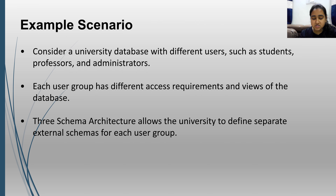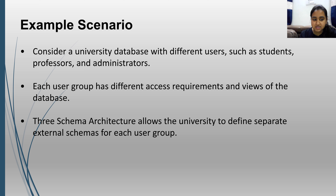As an example scenario, consider a university database with different users such as students, professors, and administrators. Each user group has different access requirements and views of the database. Three Schema Architecture allows the university to define separate external schemas for each user group, which illustrates why this architecture is used.